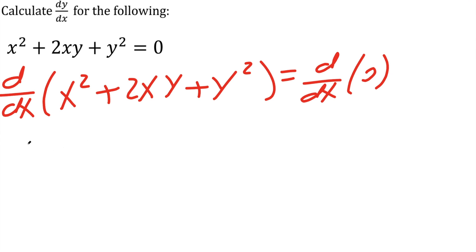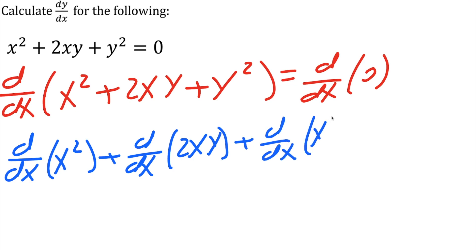From here, to make our lives easier, I'll do the derivative of each of these pieces. So we can write it as the derivative of x² plus the derivative of 2xy plus the derivative of y², and the derivative of zero is zero.